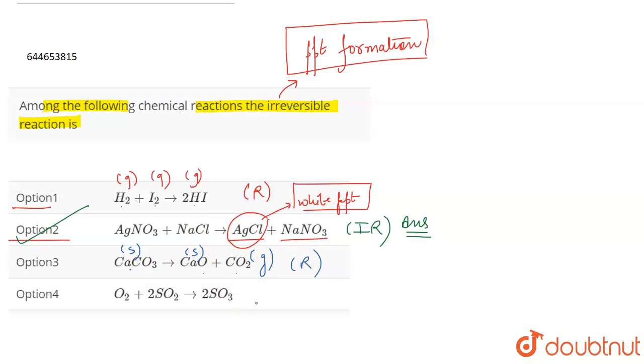When CaCO₃ decomposes it can give these products. So this can be a reversible reaction. Talking about option four: again, this is a reversible reaction. All the reactions generally in which all the reactants and products are gaseous